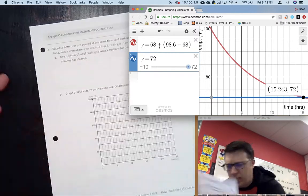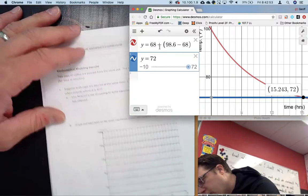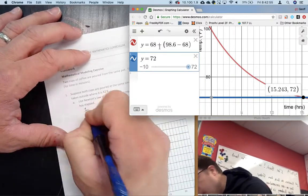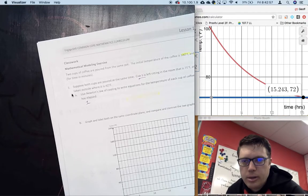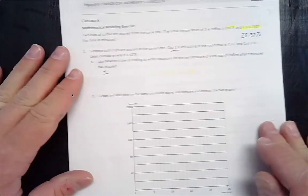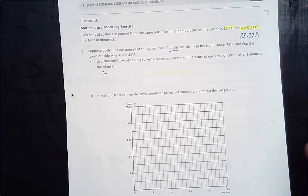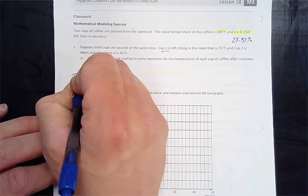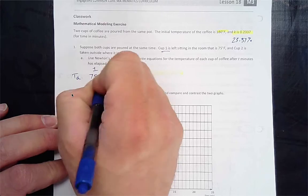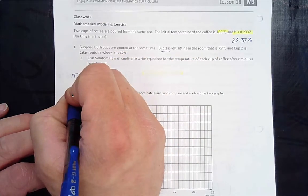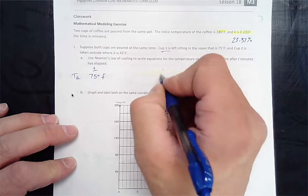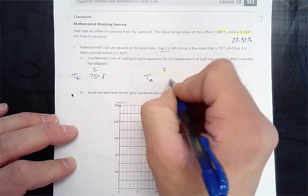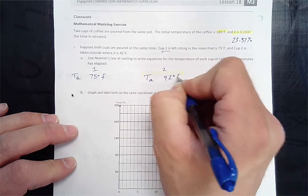Let's talk about coffee cup 1. Coffee cup 1 is left sitting in the room at 75 degrees, so we have T ambient at 75 degrees Fahrenheit.